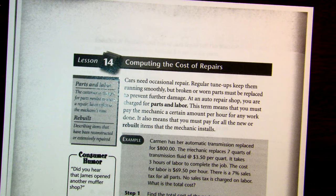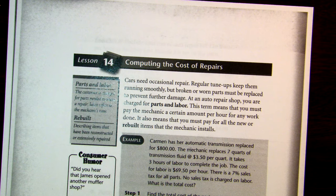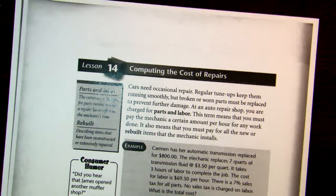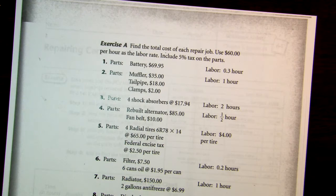When you own a vehicle, they don't last forever. Things happen, things break. And if you can't do it yourself, or know somebody who can do it for you — if you buy that part on Amazon or something — then it's going to cost you a little bit more. The way you compute that is depending on their labor rate.